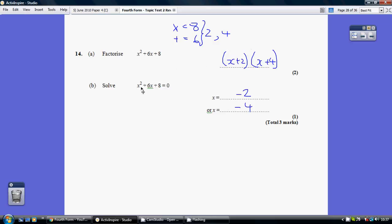if you just imagine this equaling 0, there are two solutions of what makes each bracket 0, because 0 times anything is 0. So how would you make this bracket 0? That's when x is minus 2. Or how would you make this bracket 0? That's when x is minus 4.